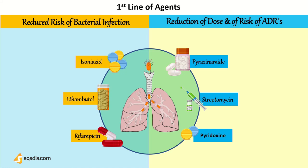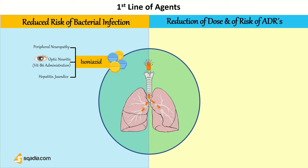The most effective first-line agents are isoniazid, ethambutol, and rifampicin. Pyrazinamide and streptomycin are important because they decrease the dose of the first three drugs and reduce the risk of adverse drug reactions. Pyridoxin, a supplement of vitamin B6, is given to reduce the toxicity of isoniazid. Isoniazid produces peripheral neuropathy and optic neuritis by inhibiting the enzyme responsible for vitamin B6 formation, which is why pyridoxin is given as a supplement.